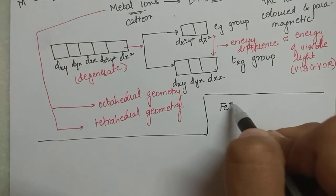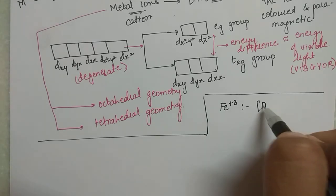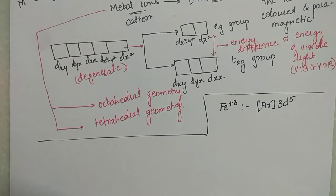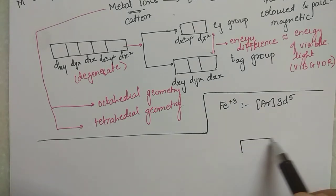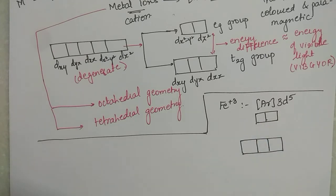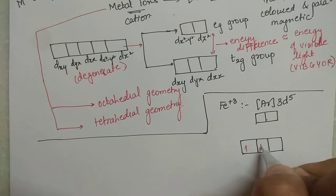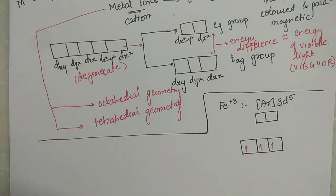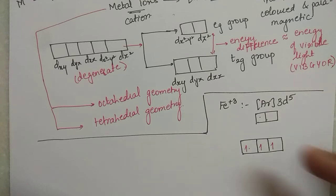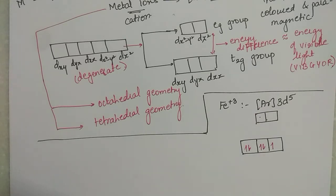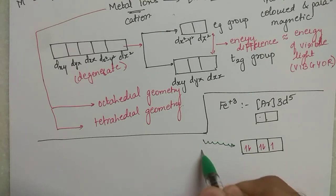Let's take the example of Fe³⁺ ion. The configuration of Fe³⁺ is [Ar] 3d⁵. The 5 d-orbitals are split into the two groups — a group of 3 (T2g) and a group of 2 (Eg). So when you shine light on this Fe³⁺ ion — essentially VIBGYOR — the d-d transition mechanism comes into play.